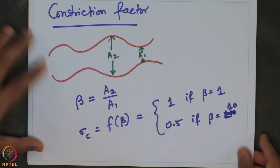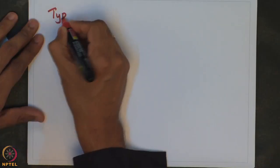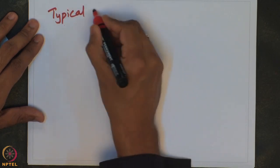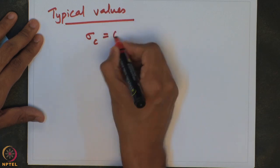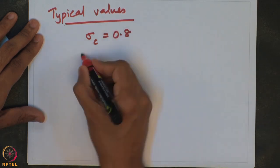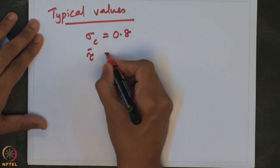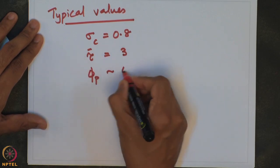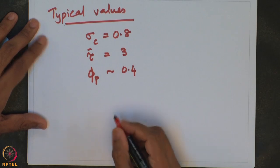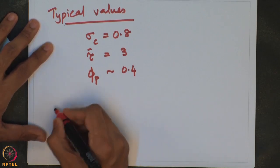Suppose we want to know what are the typical values for these constants. Typical values are: sigma_c, the constriction factor, is about 0.8; tau-bar, the tortuosity, is about 3; and the porosity is typically about 0.4. Now let us look at how to estimate tortuosity.